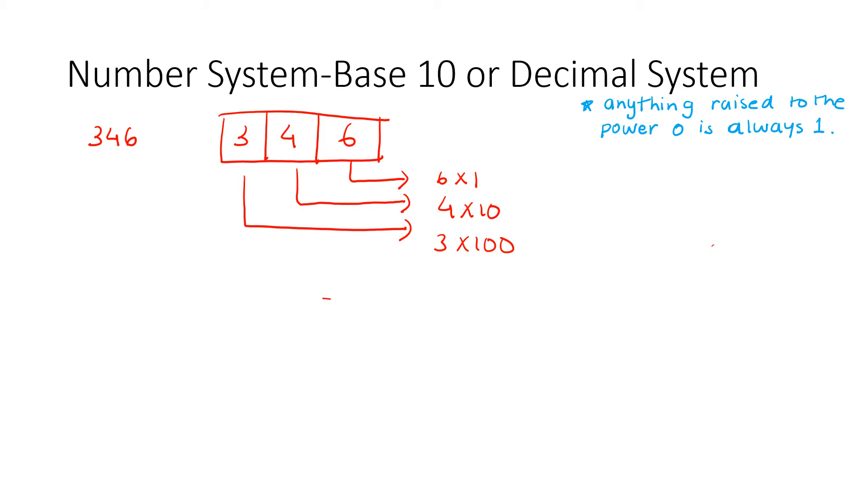Now, if I break it down further, then this breaks down into 6 into 10 raised to power 0. This becomes 4 into 10 raised to power 1. And this becomes 3 into 10 raised to power 2. And later on, I'll tell you guys how, why 10 raised to power 0 always is 1.